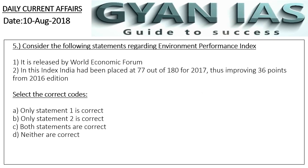Question 5: Consider the following statements regarding the Environment Performance Index. Statement 1: It is released by the World Economic Forum — this is a correct statement. Statement 2: India has been placed at 77 out of 180 for 2017, improving 36 points from the previous edition — this statement is wrong. India is actually placed at 177 out of 180, slipping 36 points from the previous edition. Hence the correct answer is Option A.